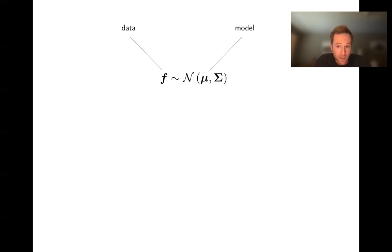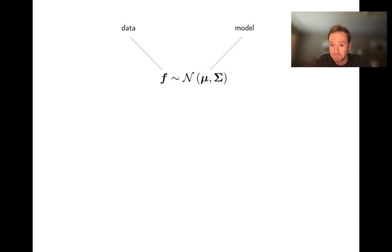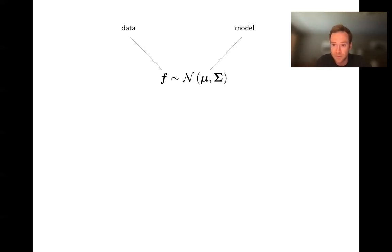A Gaussian is characterized by a mean vector, mu, and a covariance matrix, sigma. This is the notation for a multi-dimensional Gaussian, which is what we're going to be talking about today.